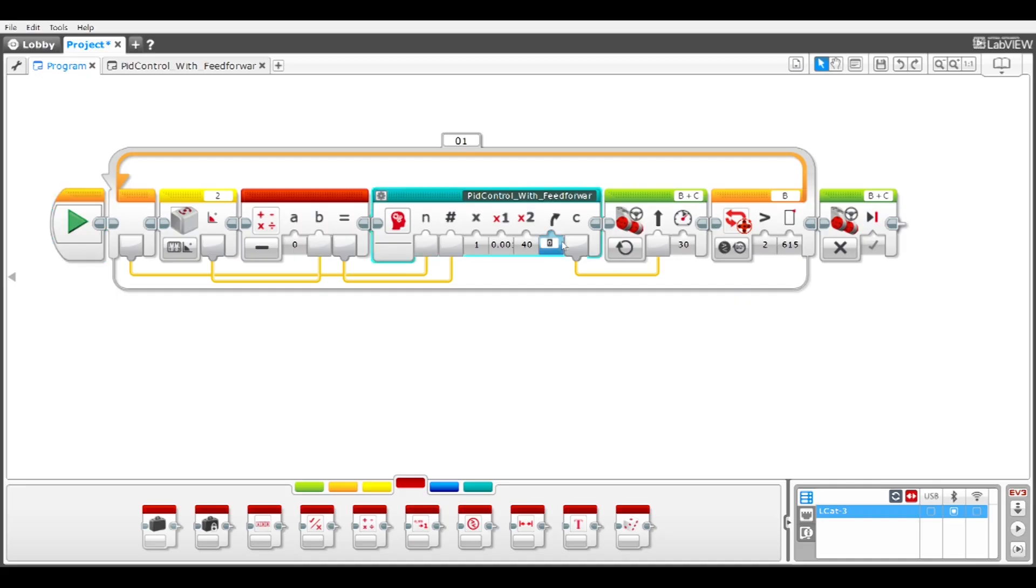We need to eliminate the initial veering to the left. Feed forward provides this initial steering angle to offset the pulling to the left from the building units. I'll make the feed forward 10 to have it biased to a positive steering angle of 10 degrees.